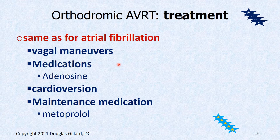Treatment is the same for all of these narrow complex tachycardias. You try Valsalva maneuvers and vagal maneuvers first, then adenosine, then cardioversion, and if it keeps coming back, ablation. Maintenance medications typically include metoprolol.